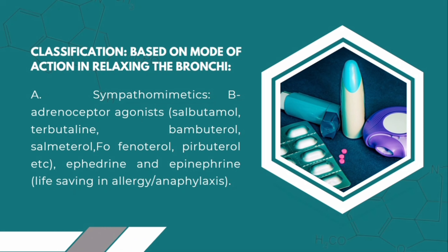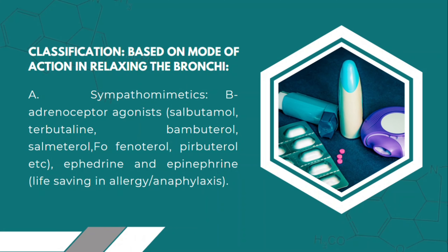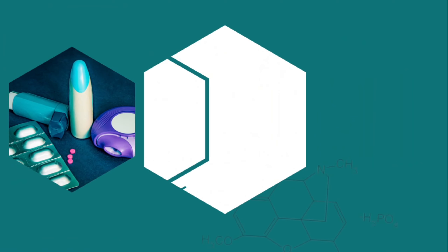Class A: Sympathomimetics — beta adrenoceptor agonists. Examples are salbutamol, terbutaline, mobuterol, salmeterol, fenoterol, tulobuterol, etc. Ephedrine and epinephrine are life-saving in allergy or anaphylaxis.